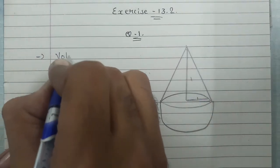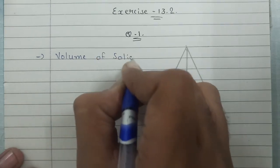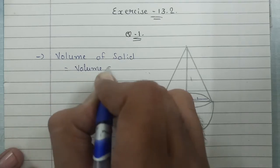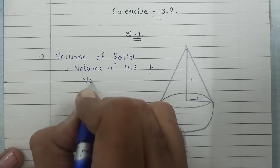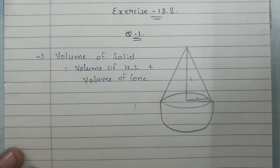Volume of solid equals volume of hemisphere plus volume of cone. Got it?